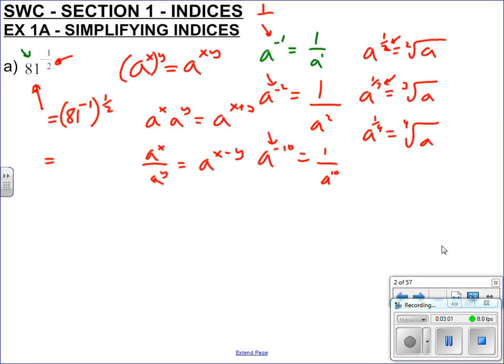So if we deal with that minus 1 first, remember minus means 1 over 81. Then we've still got that half on the outside, which means everything square rooted. Square root of 1 on the top, square root of 81 on the bottom, so that's 1 over 9. Let's do a couple more examples.